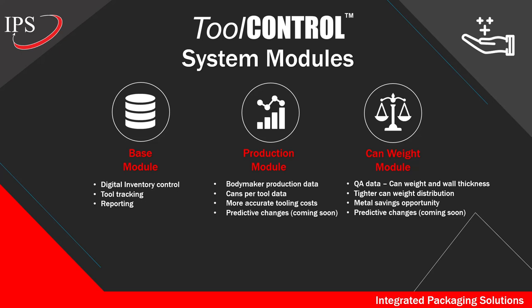The third module is the can weight module. The focus of this module is to give you a tighter can weight distribution, not putting more metal into the trim than absolutely necessary. We pull QA data, specifically can weight and can wall thickness — mid-wall, top-wall, and thick-wall. Having these three pieces of data front and center when making tooling changes allows you to focus on maintaining correct QA specifications.